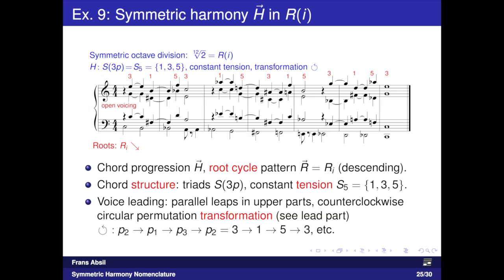Example 9 is in the last symmetric system — the one with 12 tonics. In the chord progression we use positive root cycles only, implying a chromatically descending bass part. This is a constant tension example using major triads only. The voice leading — or as Schillinger calls it, the transformation — is based on counterclockwise circular permutation of the parts, indicated by red numbers above the lead part. Note how it moves through chordal functions 3, 1, 5, 3, 1, 5, following a cycle in counterclockwise direction, yielding a voice leading in the three upper parts dominated by leaps and open position voicing.